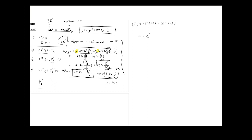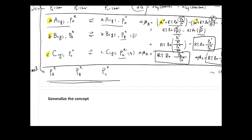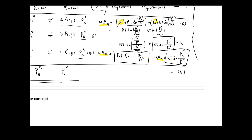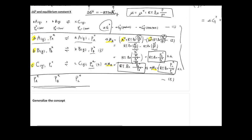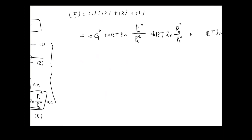In equations two, three, and four, what you have is Δμ_A, Δμ_B, and Δμ_C. So you get ΔG° + RT ln(Pa°/Pa_eq) + RT ln(Pb°/Pb_eq) + RT ln(Pc_eq/Pc°). There is one more thing to be careful of: for A, B, and C, we actually assign different stoichiometric coefficients, and those will be reflected in Δμ_A, Δμ_B, and Δμ_C. You need to multiply each term by its stoichiometric coefficient — A moles for Δμ_A, B moles for Δμ_B, and C moles for Δμ_C.